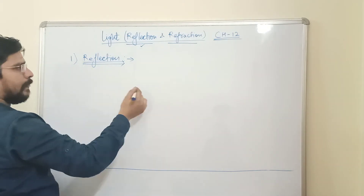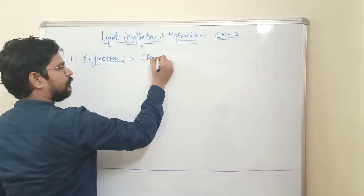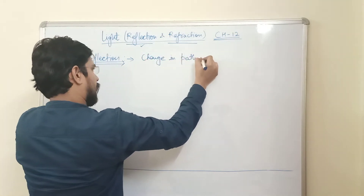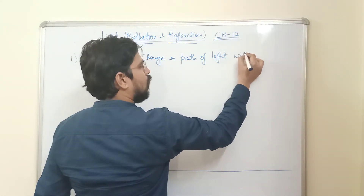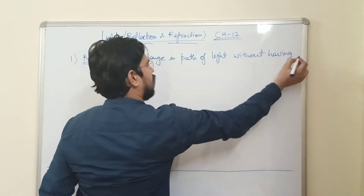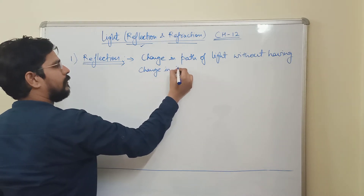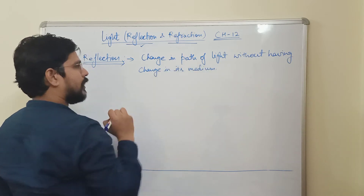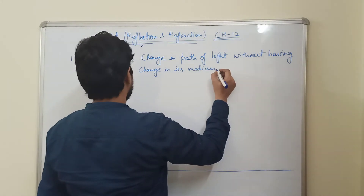What is reflection? The definition of reflection is very simple: change in path of light without having change in its medium is known as reflection.